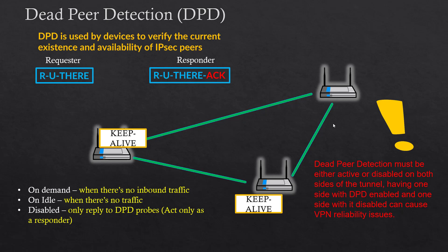I have seen cases where DPD is enabled on one side and disabled on another, and it still works. The reason it still works is because the 'disabled' feature is not fully disabled — it is still replying back as a responder. But some vendors don't have that behavior; they just disable it completely. Keep it in mind, because when you troubleshoot VPN-related issues, this is something to consider.